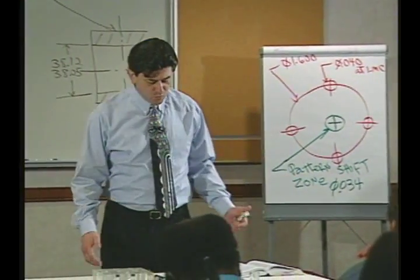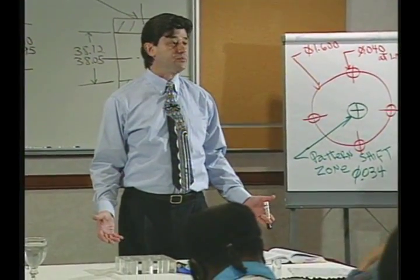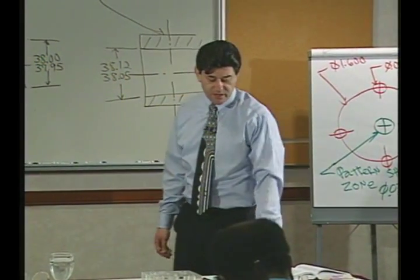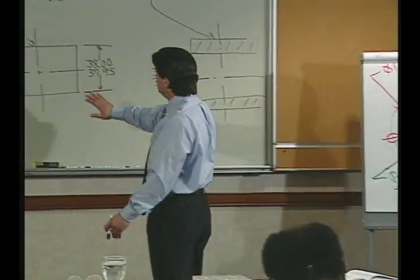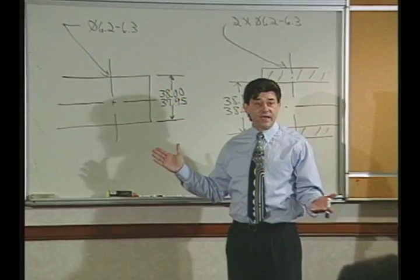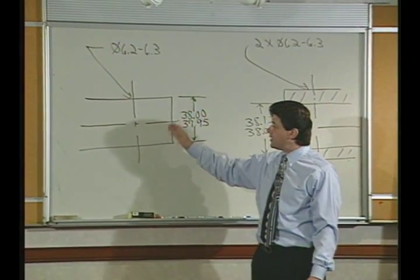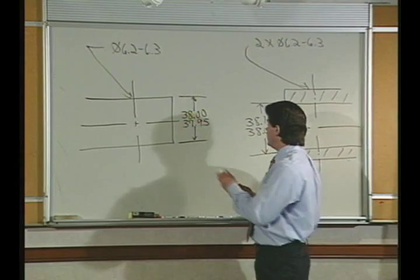Alright, what we've got to do to begin this problem is to pick a datum feature. Let's start on the inner shaft over here. We've got three features that I can see right off the bat: there's the end of the part, there's the small hole, and there's the big diameter here.